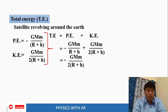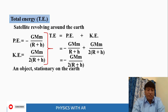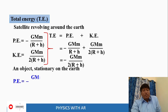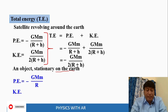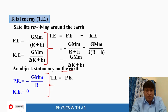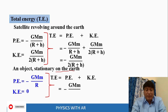The negative sign represents that it will always be an attractive force. For an object stationary on the earth, the potential energy is taken at the surface where h = 0, giving minus G·M·m divided by r. The kinetic energy is zero because it is stationary — at rest. So total energy equals minus G·M·m divided by r.